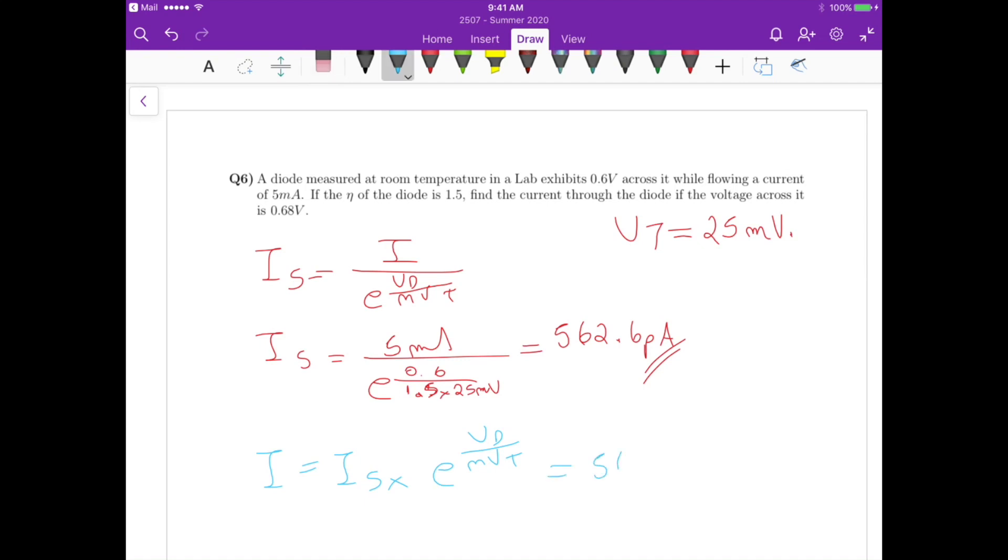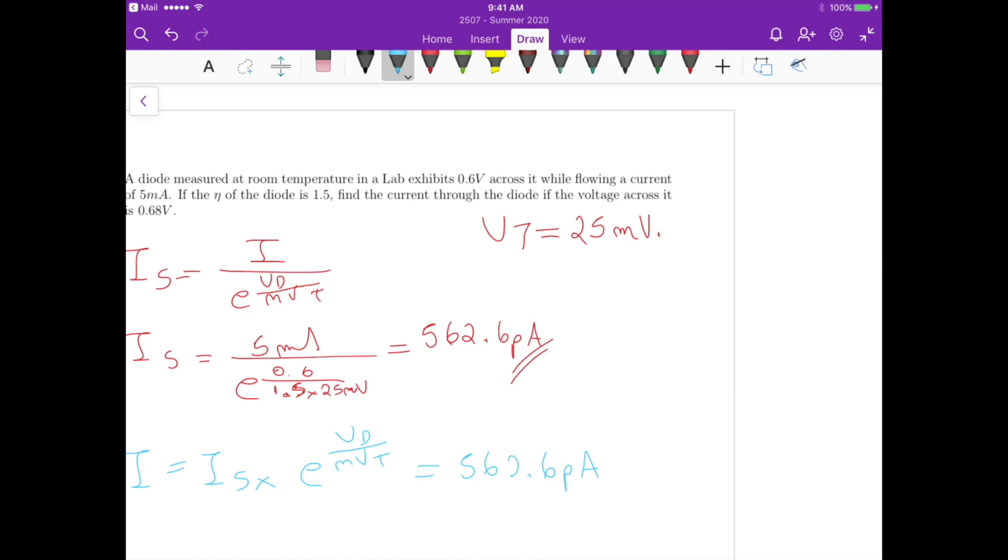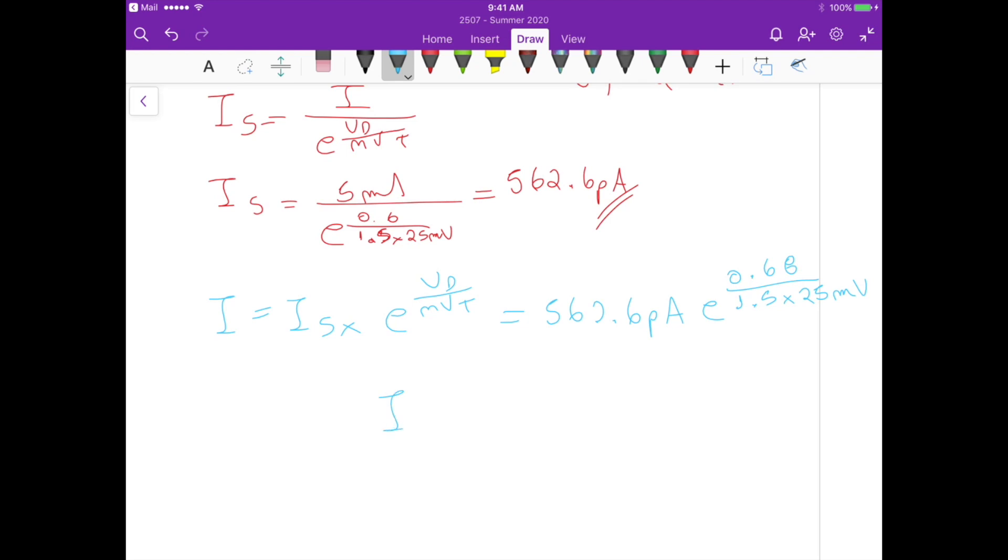So it's just those 562.6 picoamperes, 10 to the minus 12, exponential of 0.68 divided by 1.5 times 25 millivolts. So this current I is going to be 42.21 milliamperes. So that's the answer for this problem.